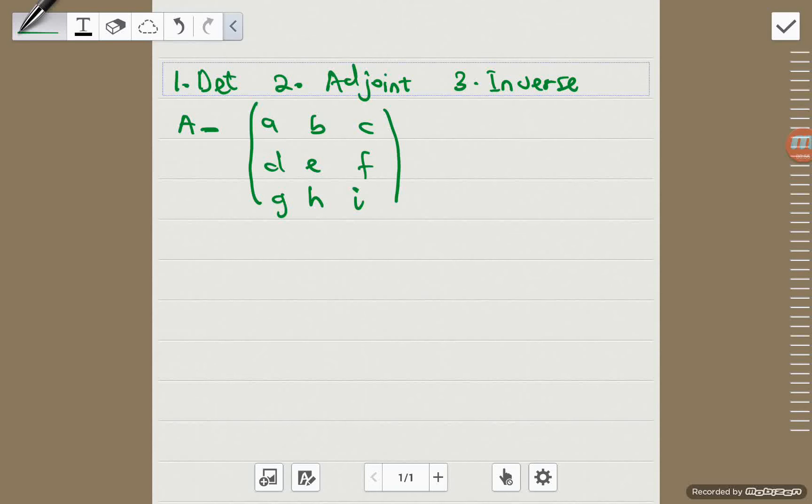the first thing that we need to do is to pick a row or a column of our choice. Now the row or the column that you're choosing should have the maximum number of zeros so that your work could be simplified. You're bound to do less work than somebody who chooses a row or a column that has the least number of zeros in it.